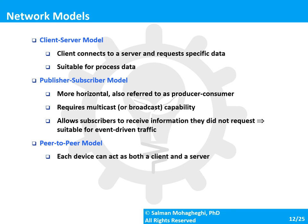Network models can be classified into three categories: client-server, publisher-subscriber, or peer-to-peer. Client-server models are used where a client requests certain information or data from a server — for example, visiting a website. In engineering applications, a controller might request information from a sensor. Publisher-subscriber models, also known as producer-consumer, involve multiple devices subscribed to a service provided by another device; when new data is available, it is shared with all subscribers.